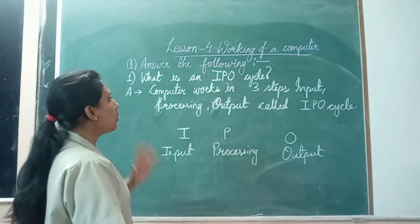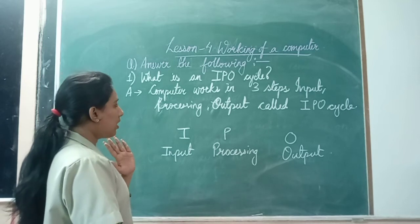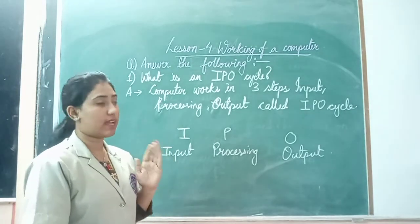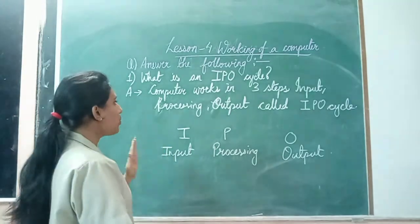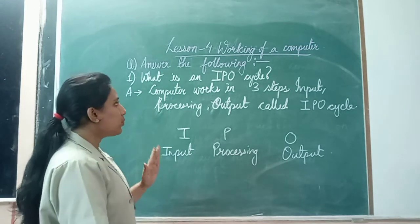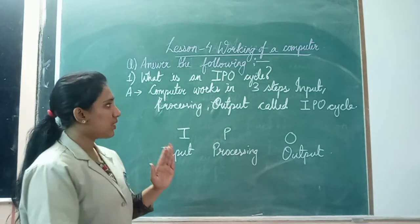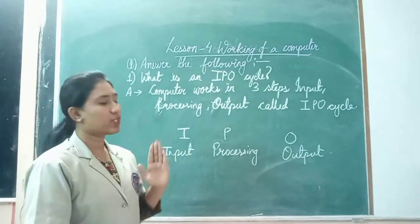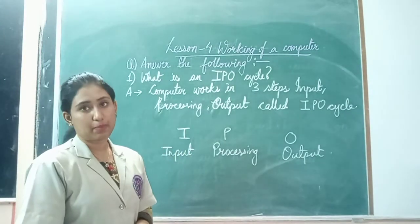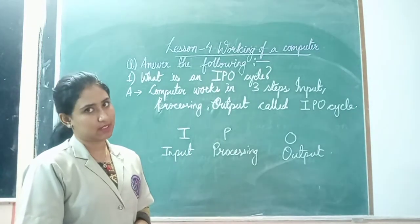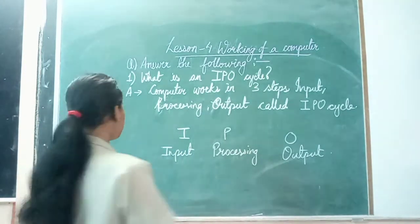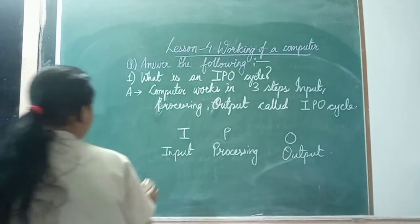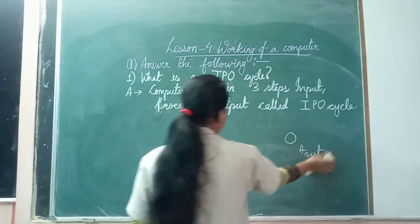This is the correct answer. This is how you are going to answer — what is an IPO cycle? You have to answer it like this: computer works in three steps — input, processing, output — called IPO cycle. Is that clear, everyone? Now we will move on to the next question.